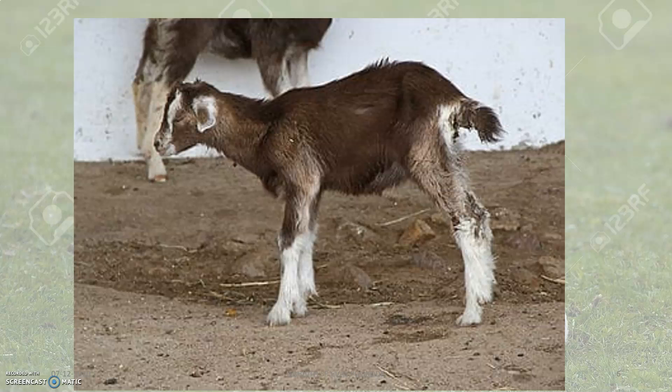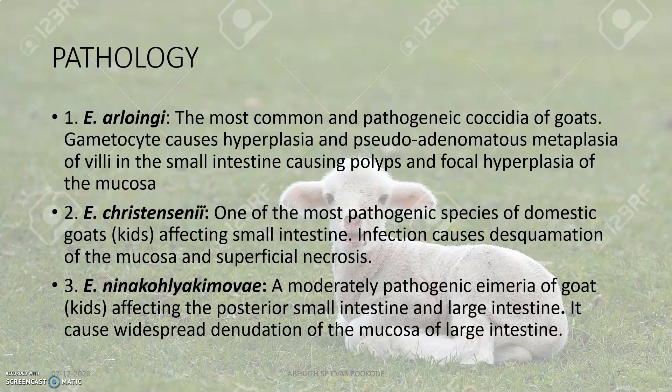Eimeria arloingi is the most common and pathogenic coccidia of goats. Gametocytes produced by the coccidia cause hyperplasia and pseudo-adenomatous metaplasia of the villi. This is an allantois-type change which leads to formation of polyps and focal hyperplasia of the mucosa.